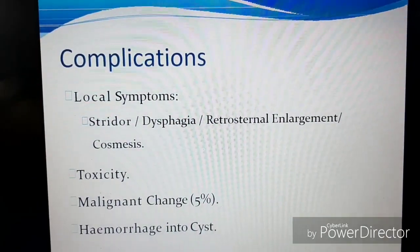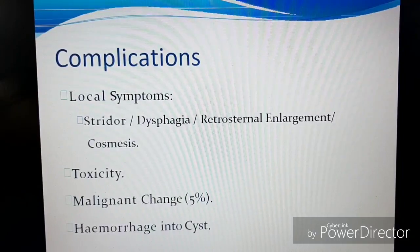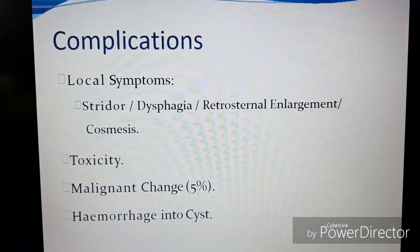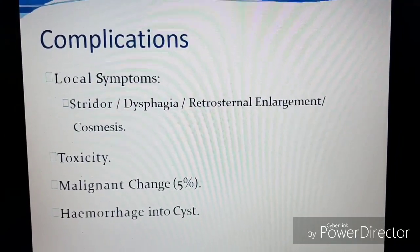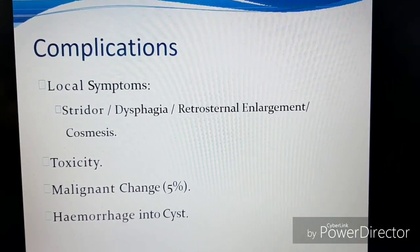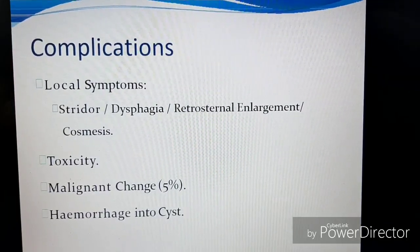What can be the clinical presentations of the disease? They may include cosmetic concerns — obviously it won't look good — discomfort, irritating cough, dysphagia, hyperthyroidism, and hoarseness of voice. Coming to the complications of goiter, local symptoms may be stridor (meaning irregular breathing), dysphagia, retrosternal enlargement, toxicity, malignant change, and hemorrhage into the cyst.